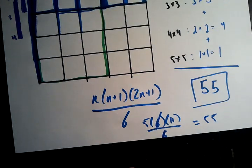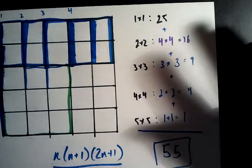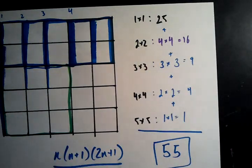And it doesn't have to be a square. If it's a rectangle, then these aren't going to be perfect square numbers. They're going to be a little bit askew. But that's the basic idea.